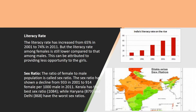Sex ratio: the ratio of female to male population is called sex ratio. The sex ratio has shown a decline from 933 in 2001 to 914 females per 1,000 males in 2011. Kerala has the best sex ratio at 1,084, while Haryana at 879 and Delhi at 868 have the worst sex ratios.